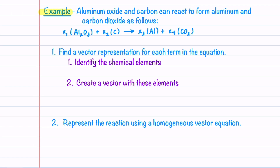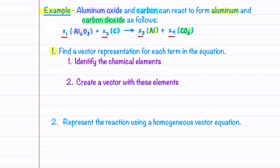The example chemical equation we'll look at is when aluminum oxide and carbon react to form aluminum and carbon dioxide. We'll balance this equation by finding values for X1, X2, X3, and X4. The first step is to find a vector representation for each term. To do that, we identify the chemical elements: Al is aluminum, O is oxygen, and C is carbon.